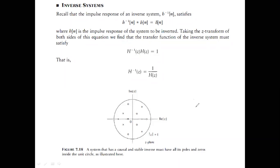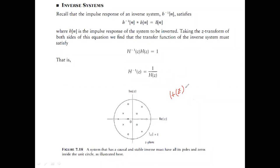Now, will the inverse system be stable? For the original H(z), stability requires poles inside the unit circle. H(z) has zeros in the numerator and poles in the denominator. H⁻¹(z) = 1/H(z) flips these: zeros of H(z) become poles of H⁻¹(z), and poles become zeros. So the stability of the inverse system depends on where the zeros of H(z) are located.